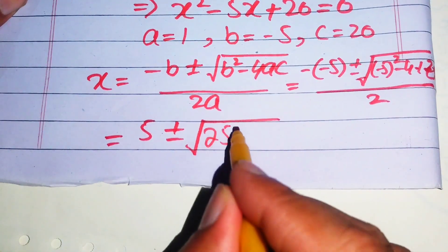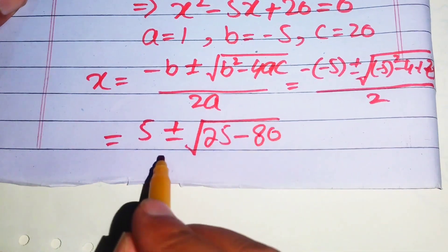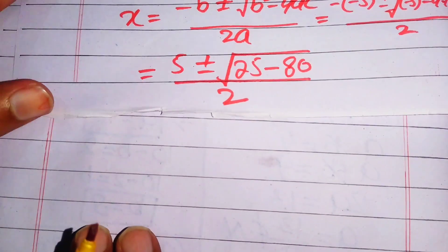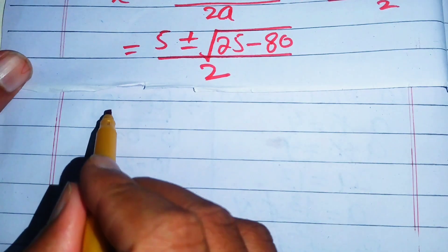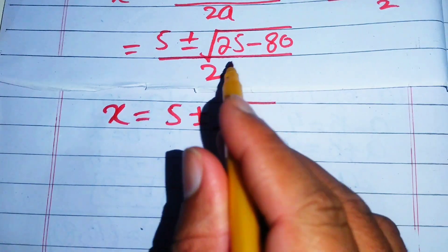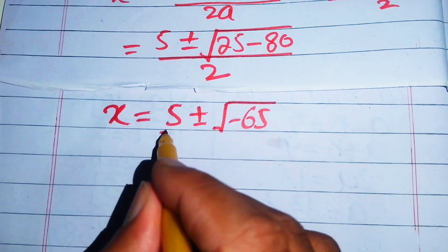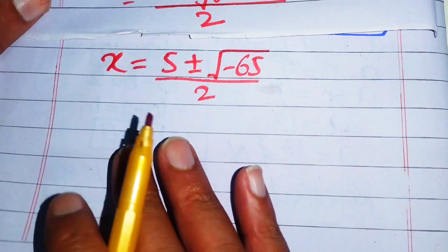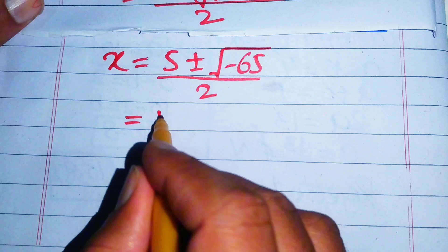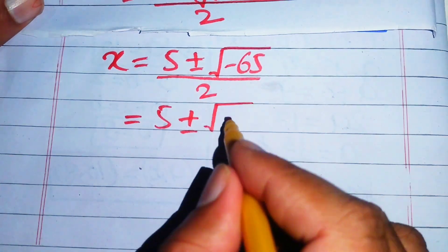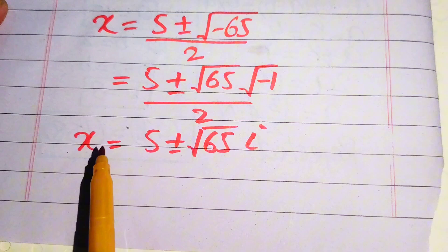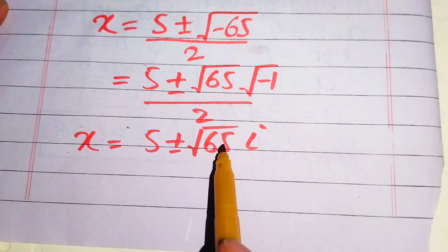We simplify: 5 squared is 25, and 4 times 20 is 80. So we have x equals 5 plus or minus square root of 25 minus 80, divided by 2. This gives square root of minus 65, divided by 2. We separate the square root as square root of 65 times square root of minus 1, divided by 2.